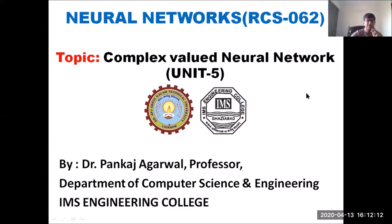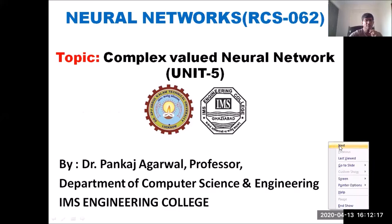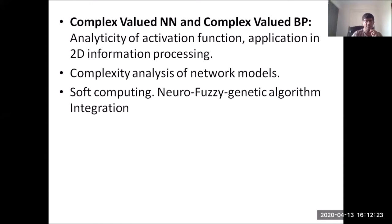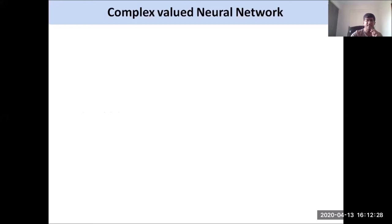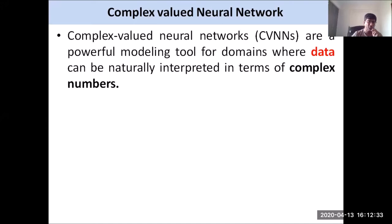Let us first try to understand why we are talking about complex valued networks. Up till now, whatever neural networks we have studied, we were dealing in terms of real values — inputs, weights, and in fact all the parameters were handled in terms of real values. So why is there suddenly a need for complex values, and what kind of advantages can we have with complex value representation in neural networks?